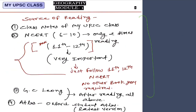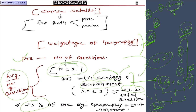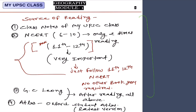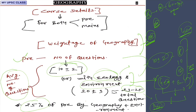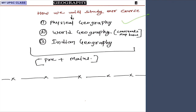This is the basic idea of the weightage for both prelims and mains. Already one video has been provided on how to read geography from books. Basically three books are needed. In our class, written notes will be provided — my UPC class note series for geography. We are going to divide geography into three parts: physical geography, world geography, and Indian geography.